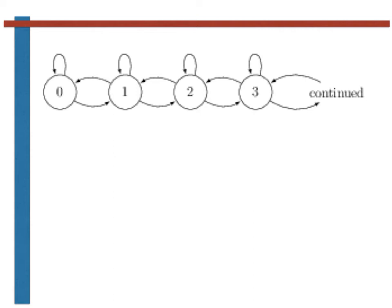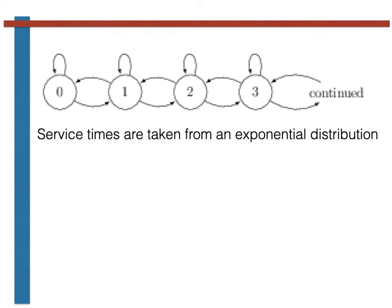The amount of time it takes a customer to be served is given by an exponential random variable, as this is the only random variable that has the no memory property. If we were to use any other distribution to simulate service times, the model would no longer have the Markov property.